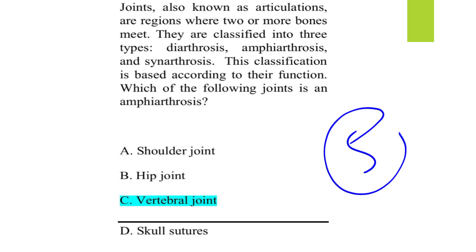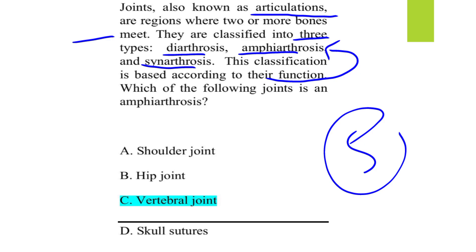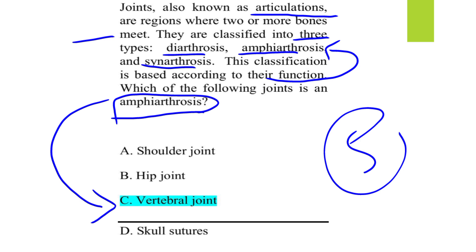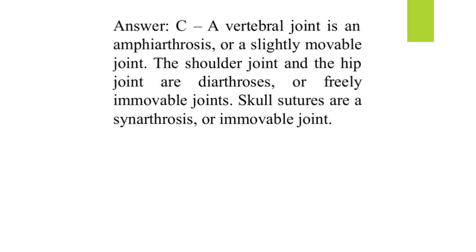MCQ number five: joints, also known as articulations, are classified into three types based on function — diarthrosis, amphiarthrosis, and synarthrosis. The question asks which is an example of amphiarthrosis. The answer is the vertebral joint, which is a slightly movable joint.